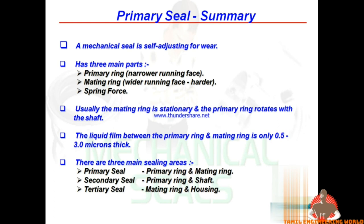The main parts are the primary ring and the mating ring. If you have a leak in the primary seal, it can involve the mating ring. The liquid film thickness between the primary ring and mating ring is 0.5 to 3 microns. There are three main paths where leakage can occur.